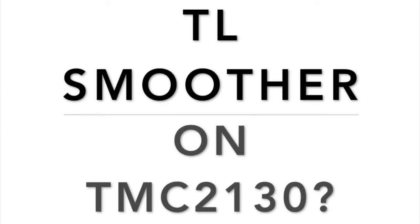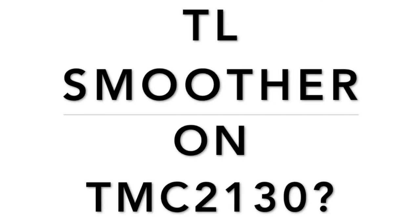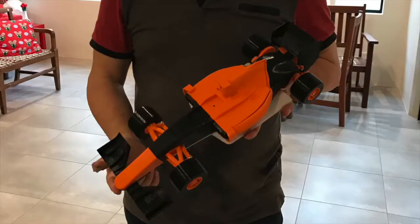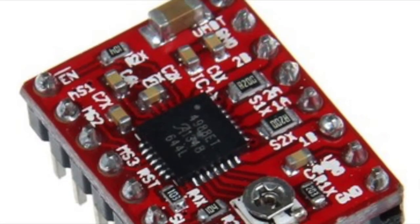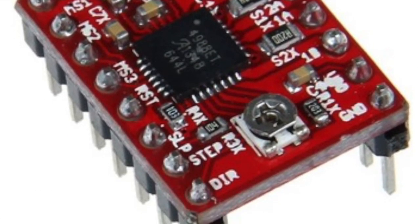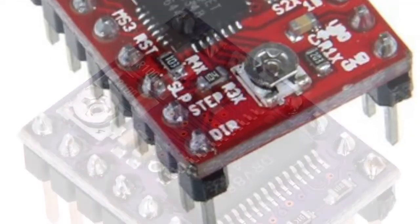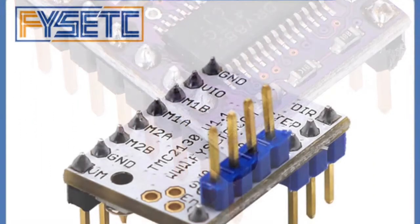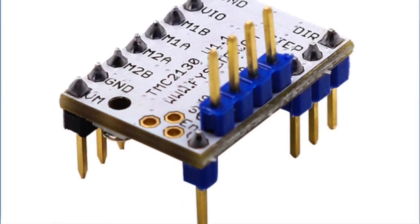Do you need tail smoothers on TMC2130? I was inspired by some questions on YouTube, so let's find out. I set up my RAMPS with three different stepper drivers: the A4988, the DRV8825, and the TMC2130. Then in Simplify3D, I used the G-code to move the Y, Z, and E axes at 10 millimeters per second.